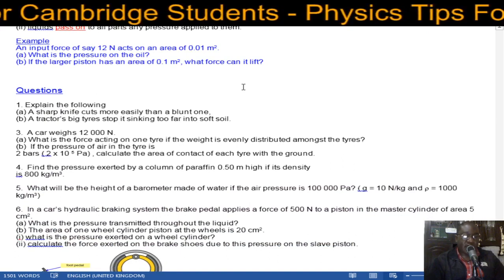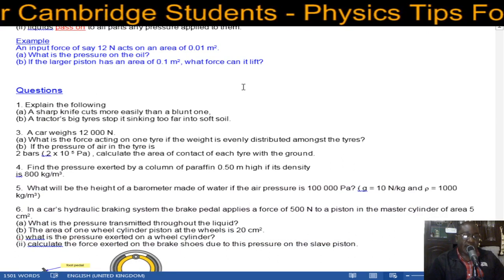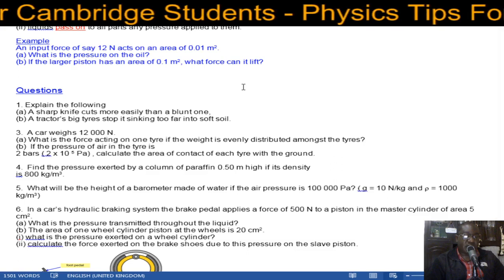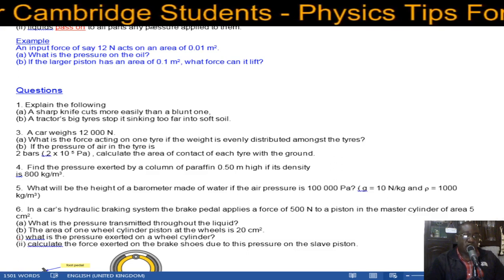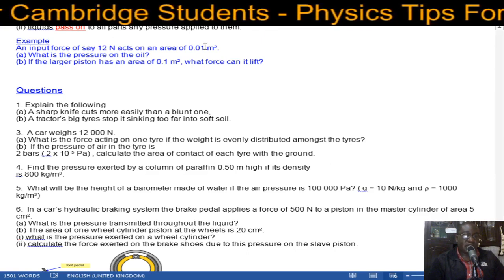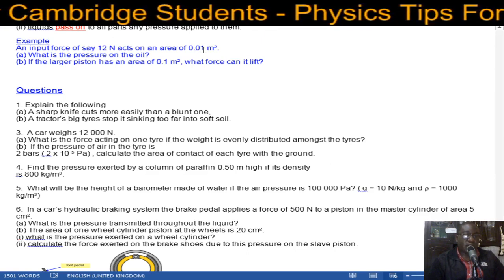An input force of say 12 newtons acts on an area of 0.01 square meters. What is the pressure? Pressure is equal to force over area, which is going to equal 12 newtons divided by 0.01.